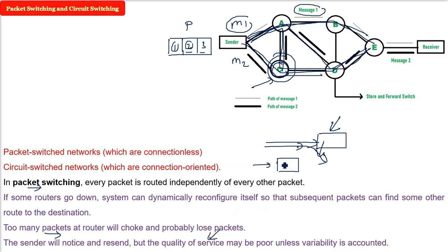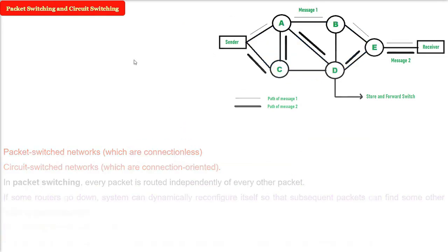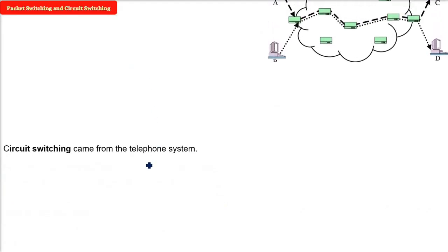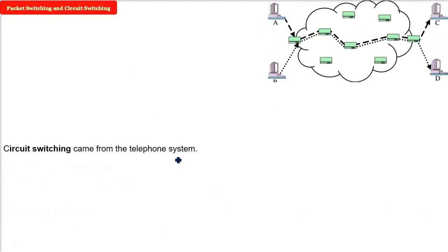For example, if you are sending an image using packets and one packet is lost, how do you see a complete image at the destination?